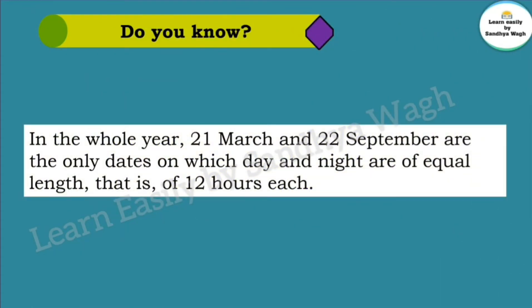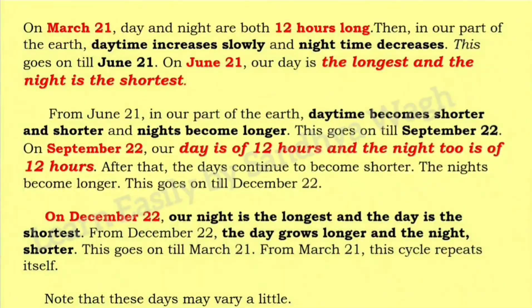Now, do you know? In the whole year, 21 March and 22 September are the only dates on which day and night are of equal length — that is, of 12 hours each. On March 21, day and night are both 12 hours long.